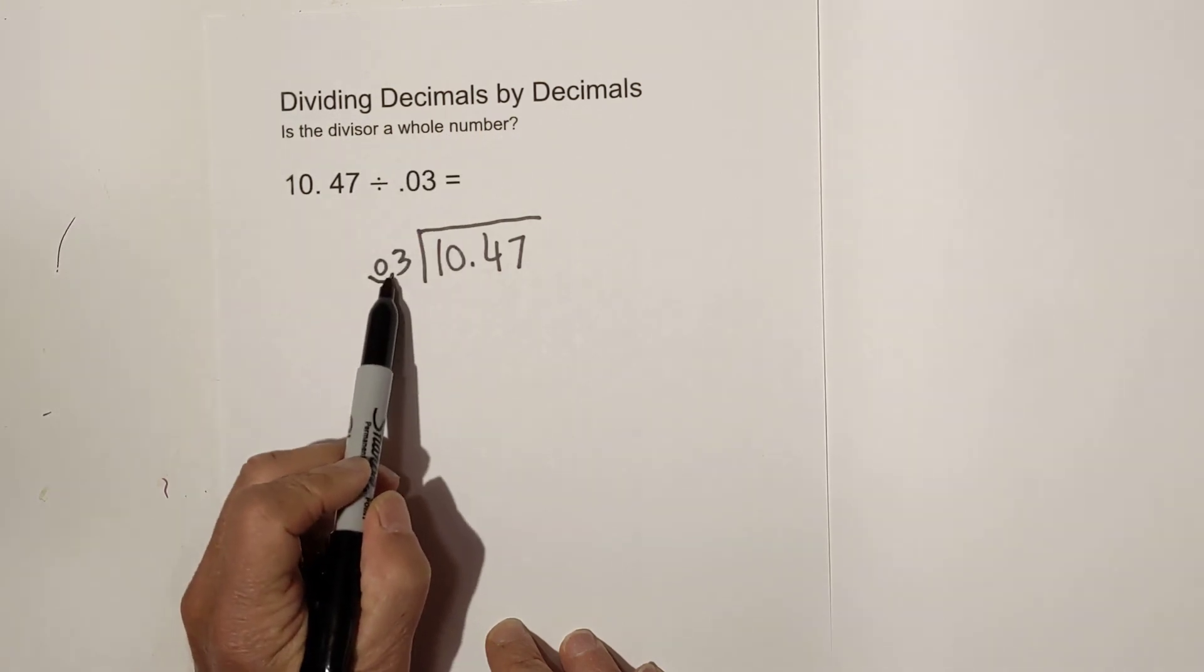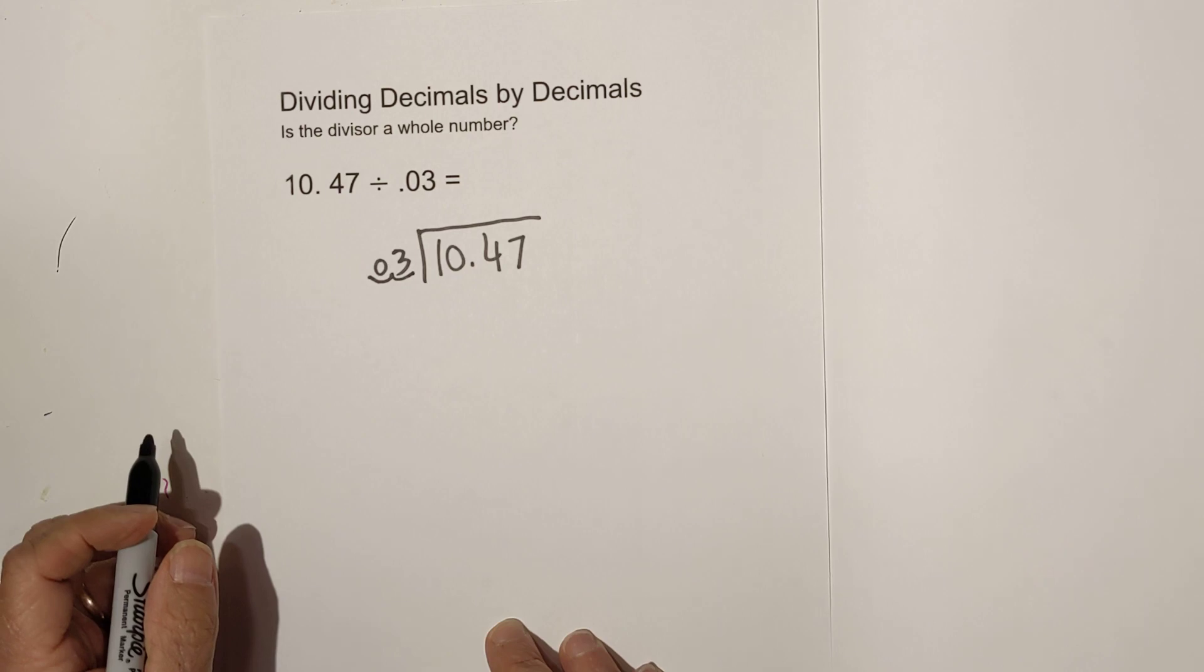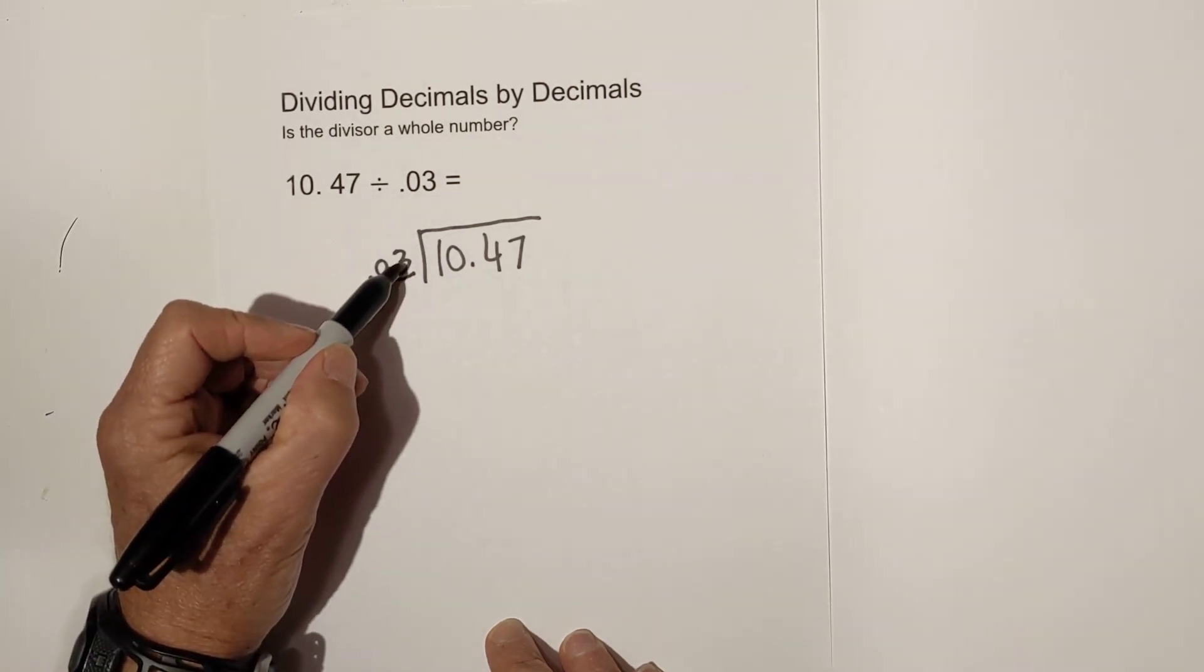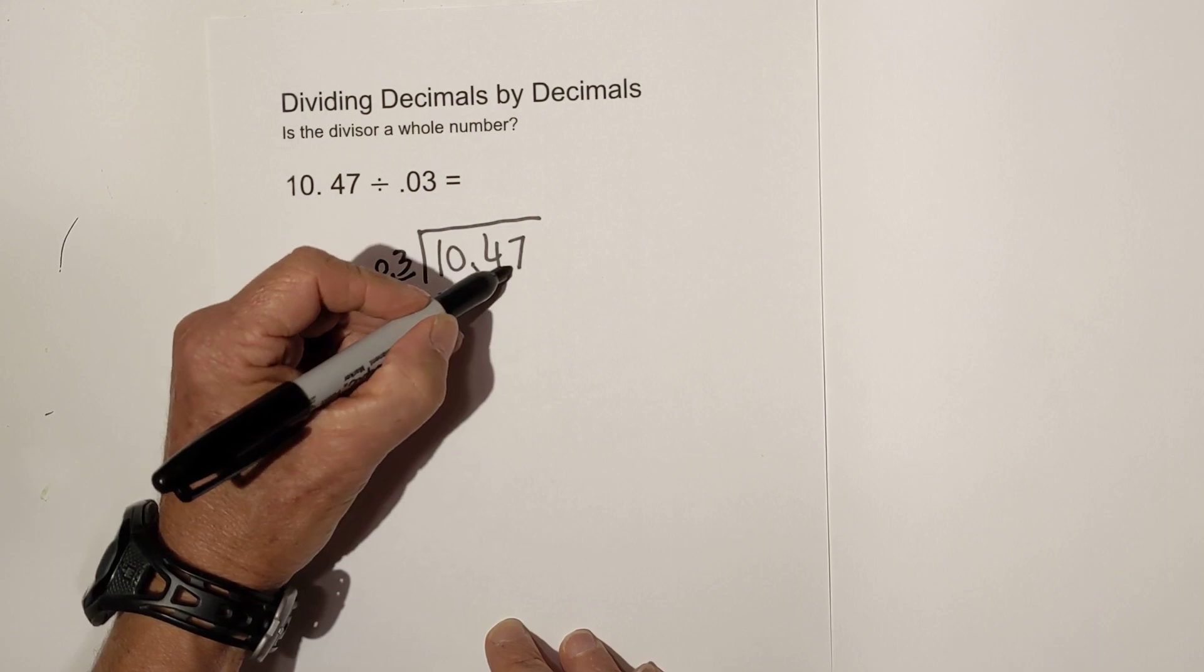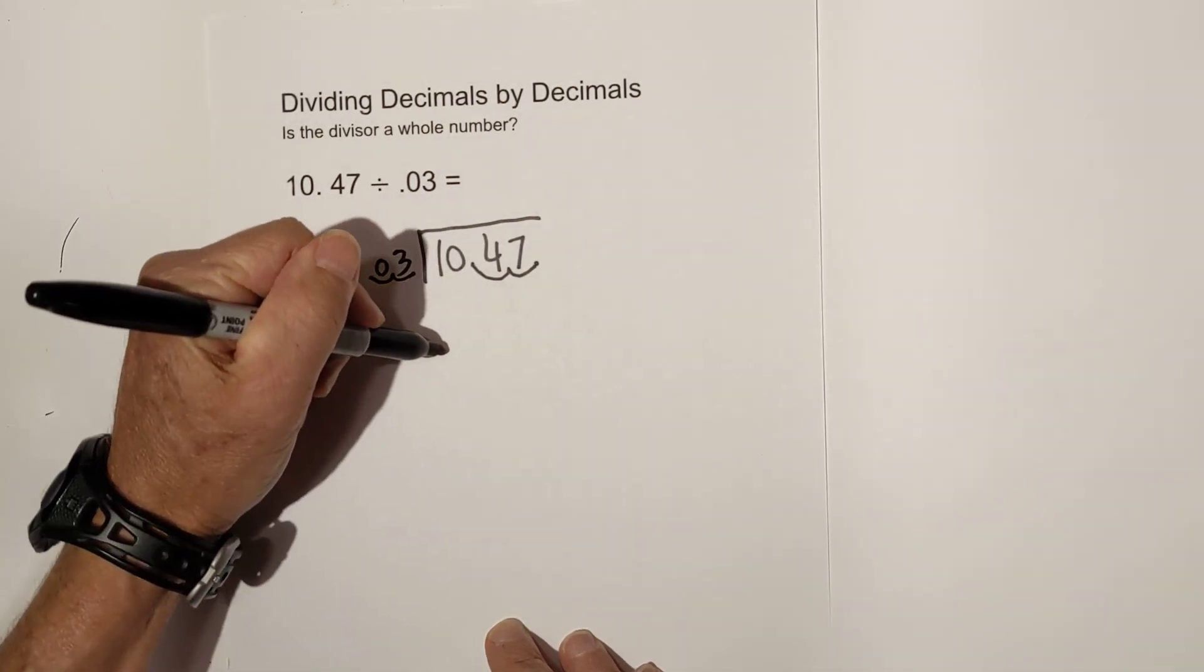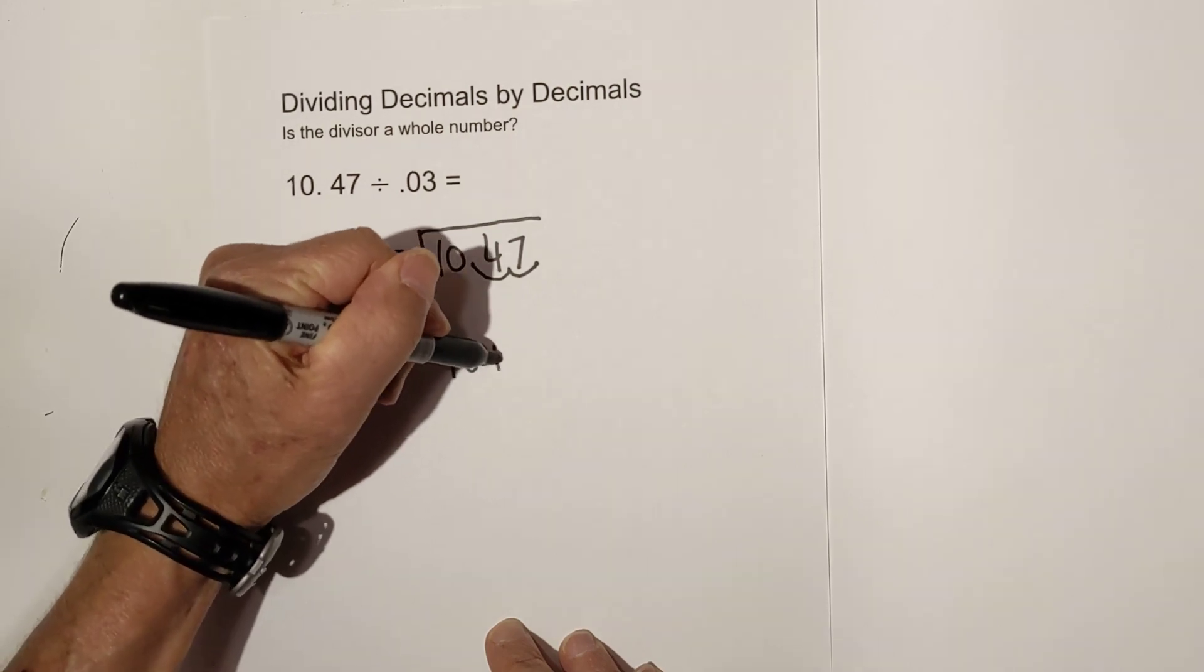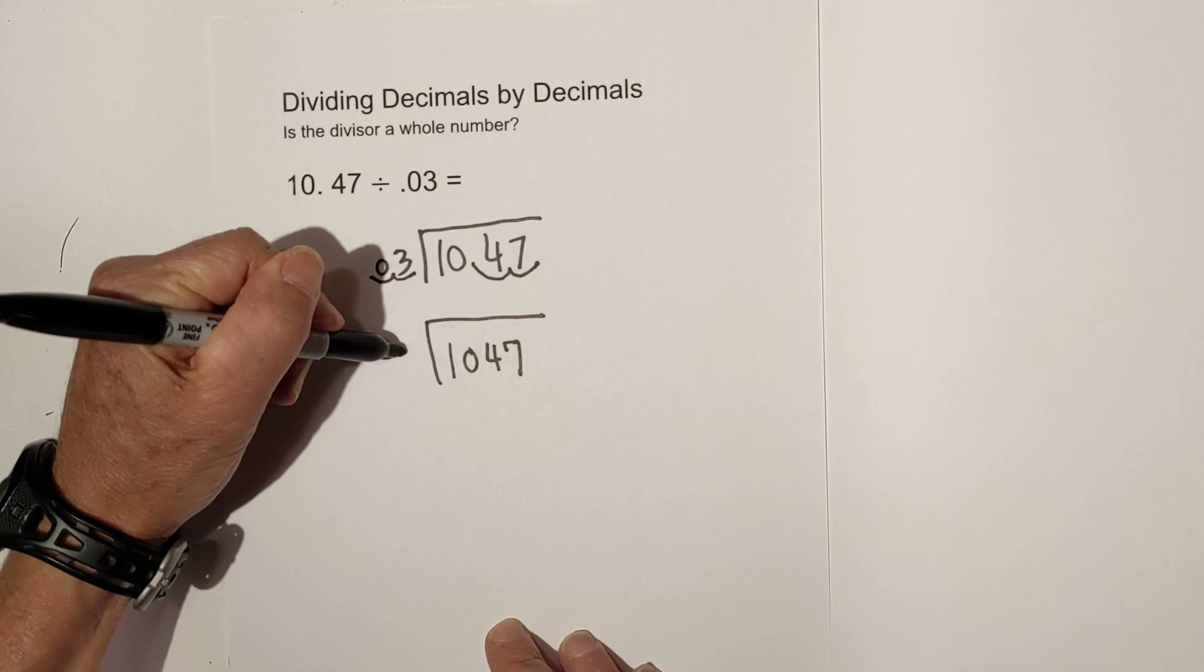So let's move it one place. Is the divisor a whole number? No, it's not. So we have to move it two times. And what we do on the outside, we need to do on the inside. So we're going to need to move this two places. Let's rewrite this so it's not so messy. And this is what we get.